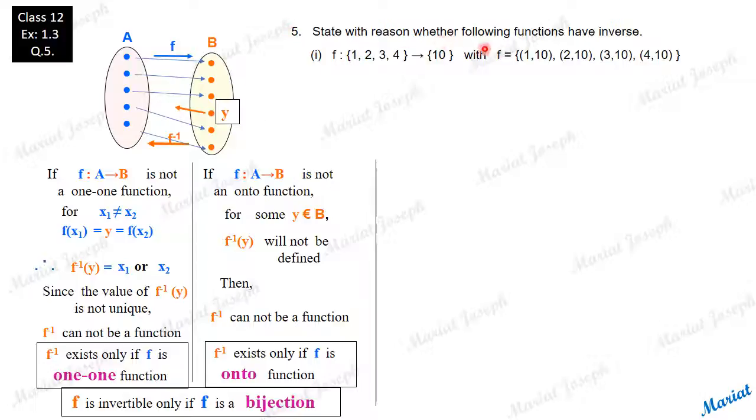State with reason whether the following functions have inverse. f defined from set {1, 2, 3, 4} to set {10}. And the f rule is expressed as a roster form. 1's image is 10, 2's image is 10. So the arrow diagram says this. All of these elements have same image 10.